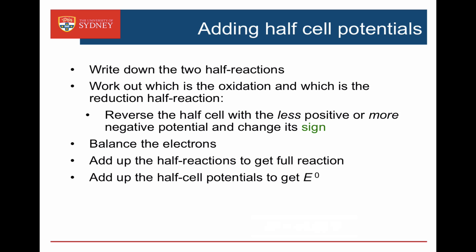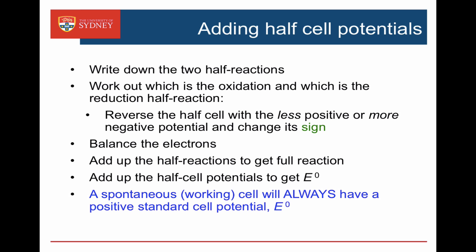To summarize: when combining two half cells, write down the two half reactions, work out which is the oxidation half cell and which is the reduction half cell by looking for the one that's least positive or more negative as a reduction, then reverse it and change its sign. Make sure the electrons are balanced, add up the half reactions to give the full reaction, and add up the half cell potentials to give the full cell potential. A spontaneous working battery will always have a positive cell potential — if we've reversed the wrong one, we'll likely get a negative cell potential.